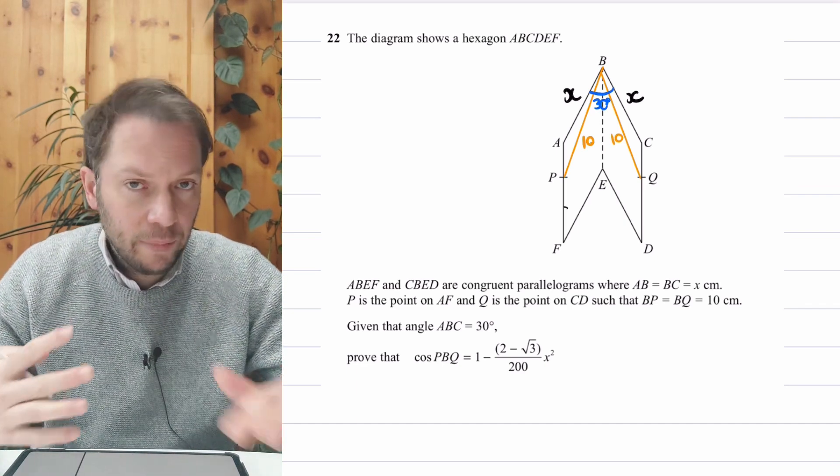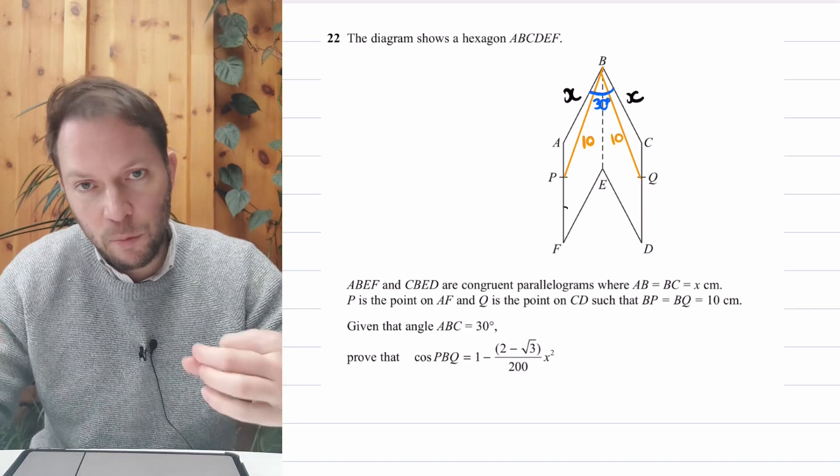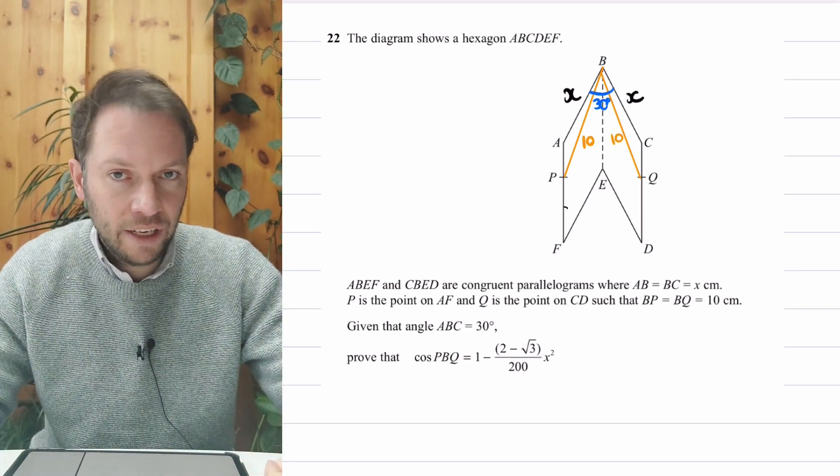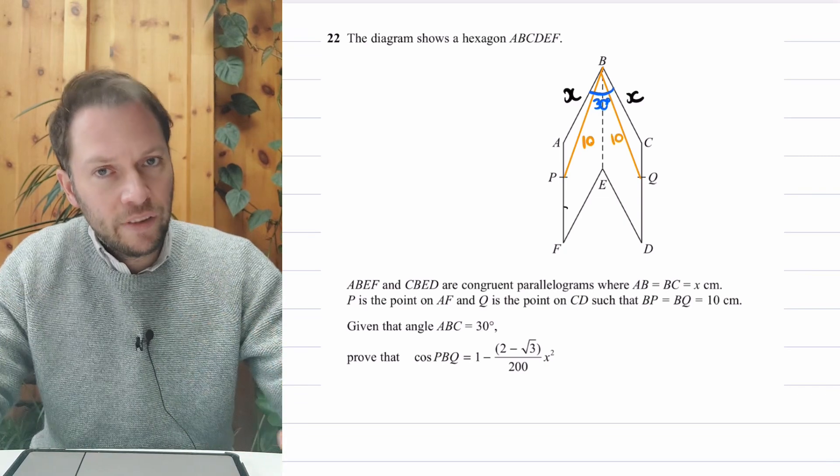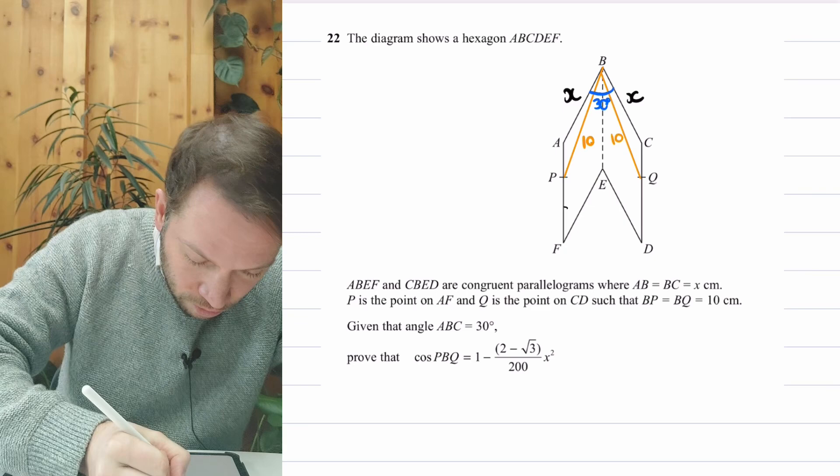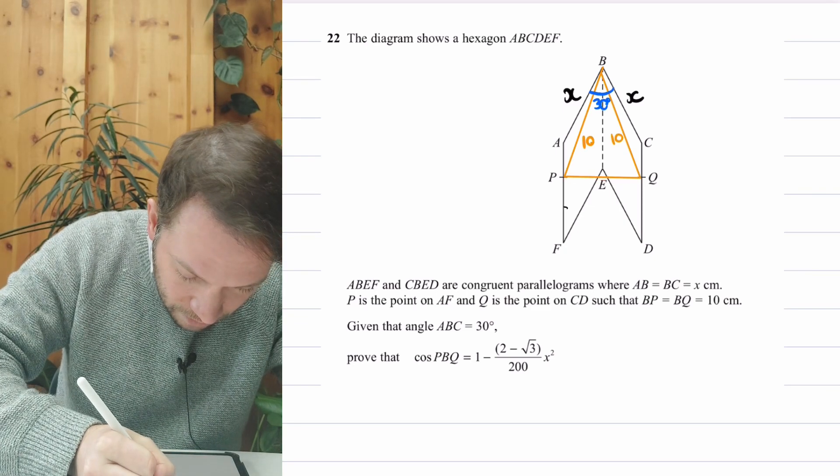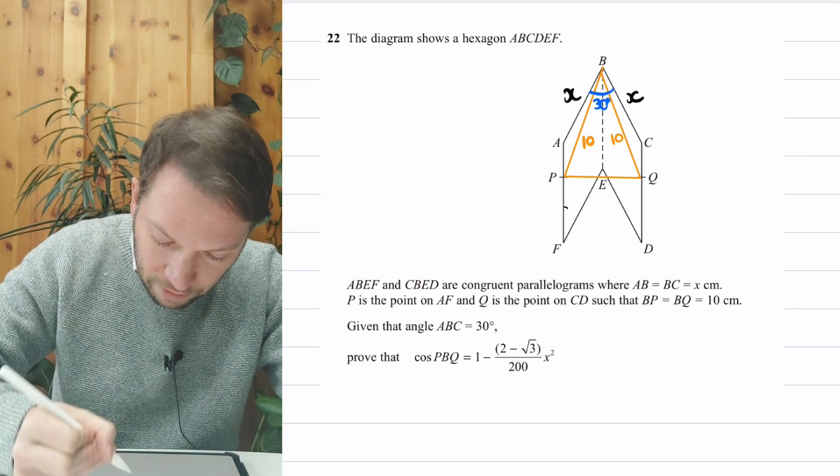Now, you might see based on the information I put in the diagram, it looks like we might have some triangles. And we have ways of dealing with angles and side lengths and triangles. We can use some trigonometry. So let's try and draw out these triangles separately and see if that's going to help us. So if I draw a line from P to Q, we can see we've now got a triangle PBQ. And let's draw that out separately.